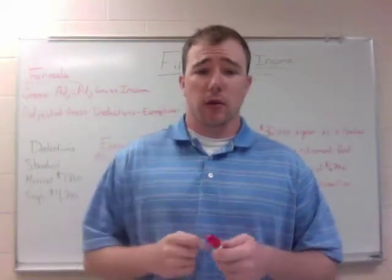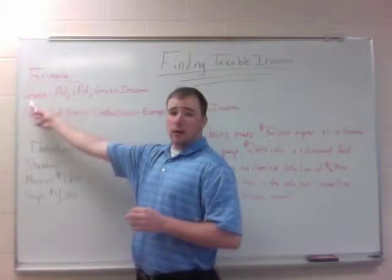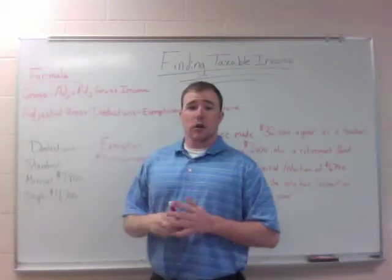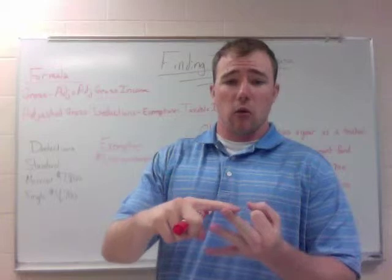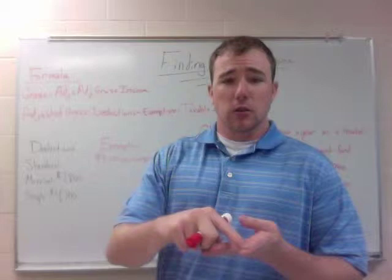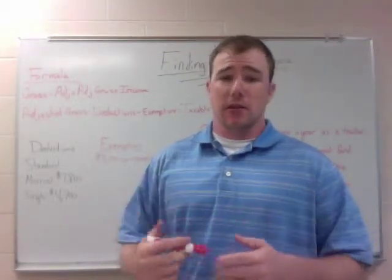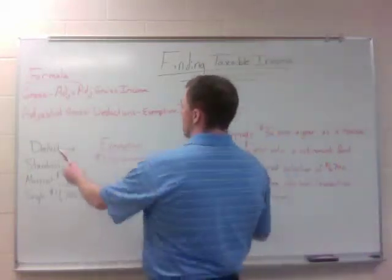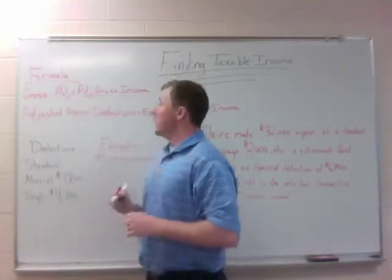There are two formulas we're going to use to find taxable income. You can see the first one up here. You're going to find your gross pay — you take your gross pay minus your adjustments. Adjustments are things like business losses, penalties, state and local tax. Those can be tax adjustments. They can also be retirement funds — approved retirement funds. You can take those as adjustments and subtract that from your gross pay, and that gives your adjusted gross income.